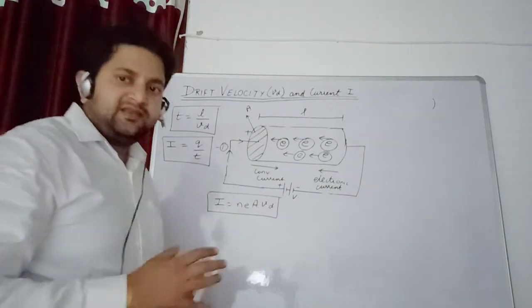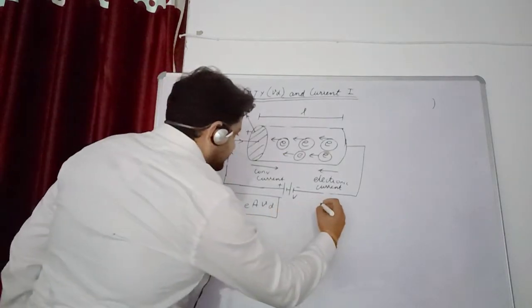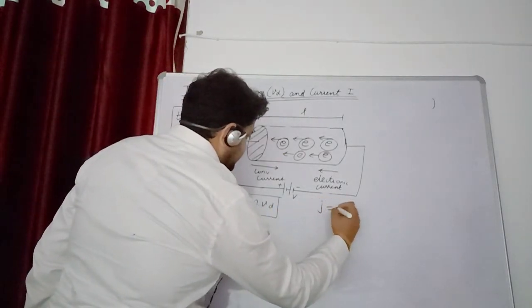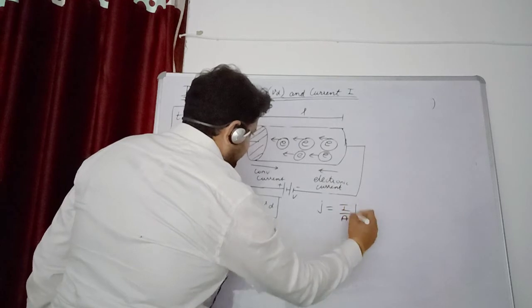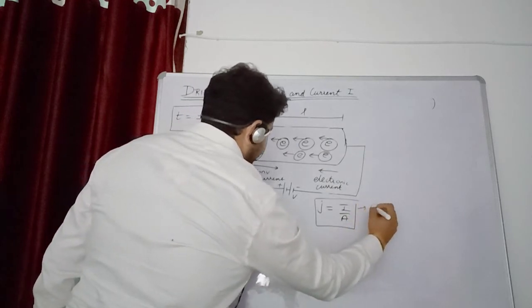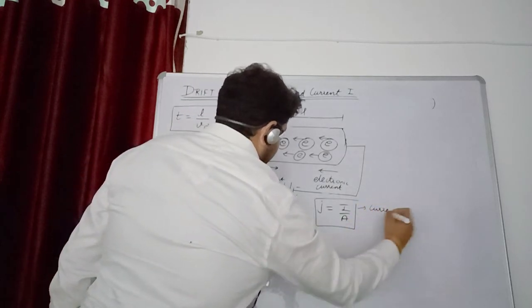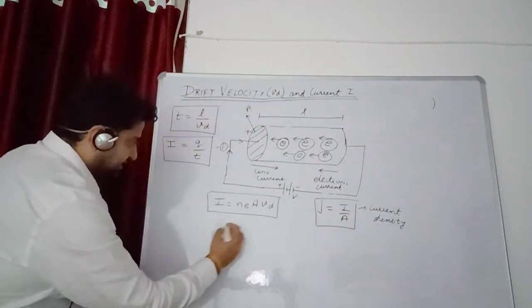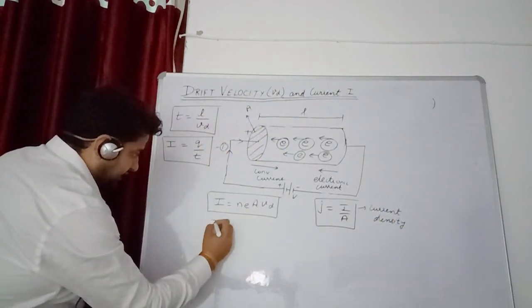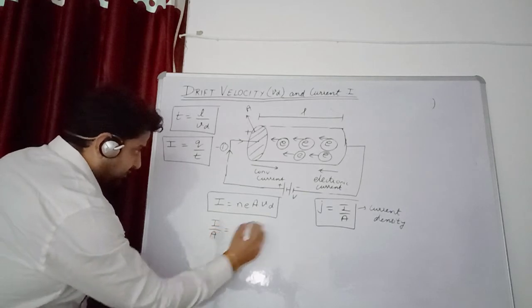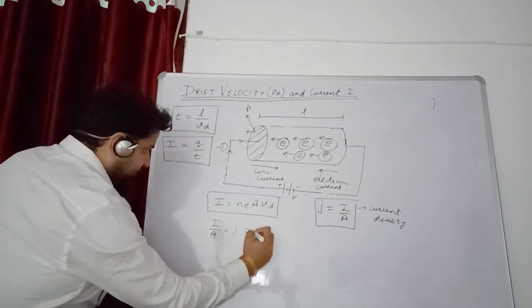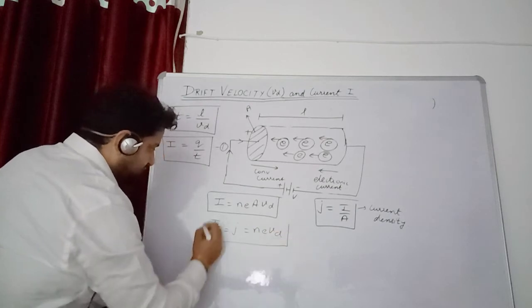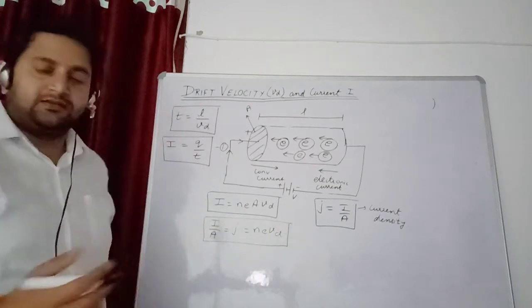Now there is another physical quantity known as current density, denoted by J, equals I upon A, that is current per unit area. From here we can see that I upon A equals J, which equals N E vd. These are some formulae I can derive.